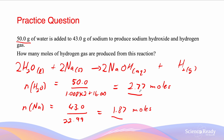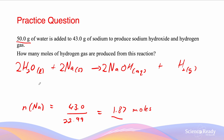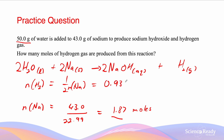From here, we can see how many moles of hydrogen gas can be formed for each mole of sodium. Since there is a 1 to 2 ratio of hydrogen to sodium, exactly half the number of moles of sodium metal that have reacted are going to be produced as hydrogen gas. The number of moles of hydrogen gas is going to be half the number of moles of sodium metal, which equals 0.935 moles. And this is our answer.